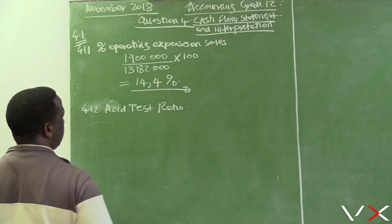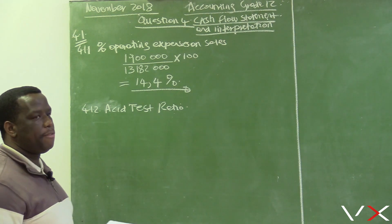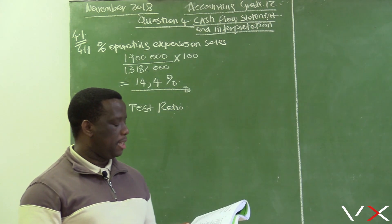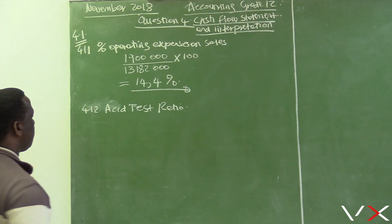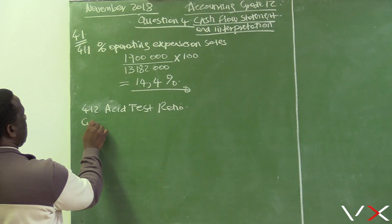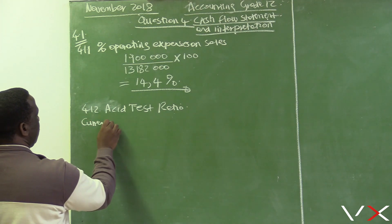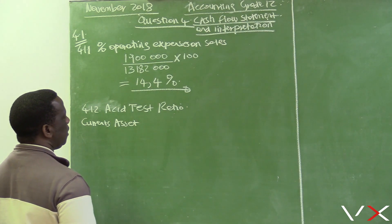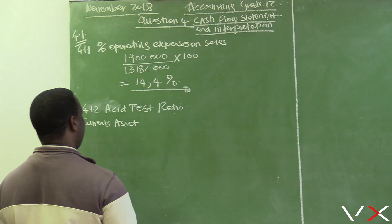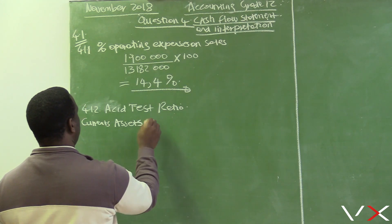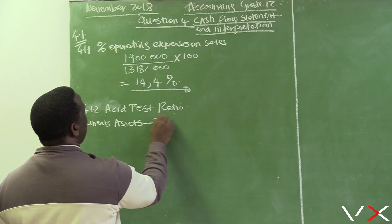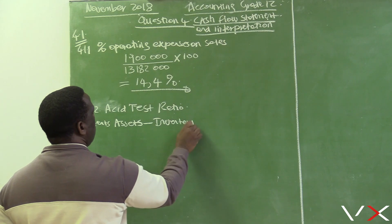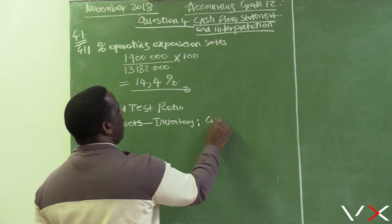The formula for the asset test ratio is: current assets minus inventory, divided by current liabilities. Current assets are made up of inventory, debtors, and cash. We subtract stock because we are testing the scenario where stock cannot be sold.